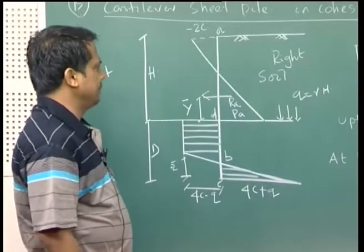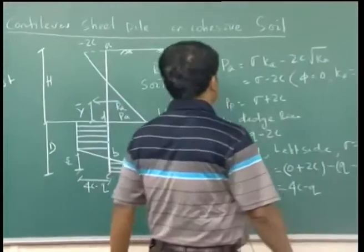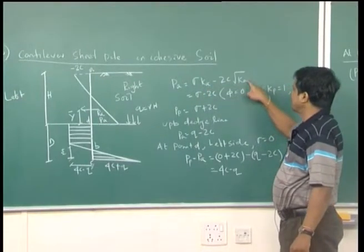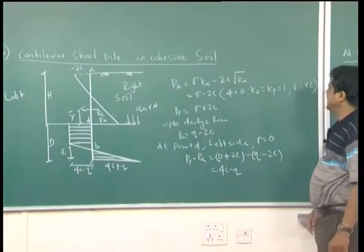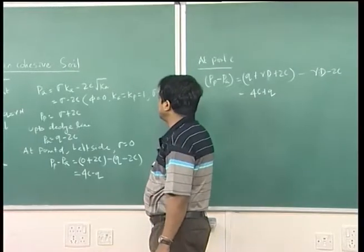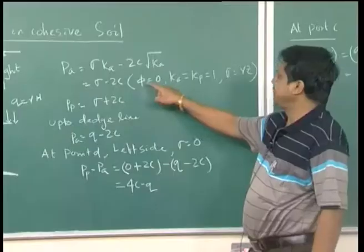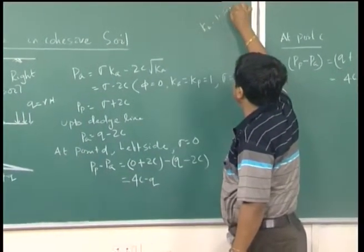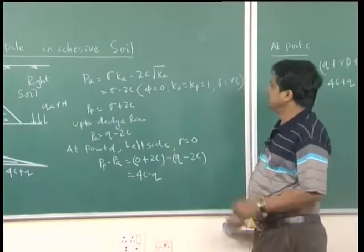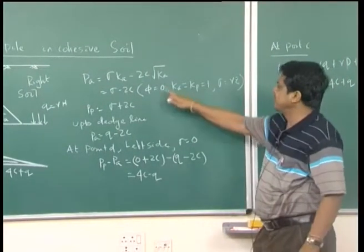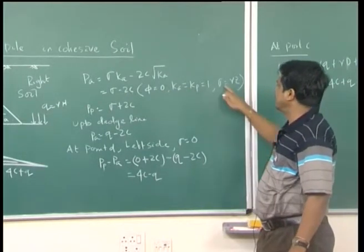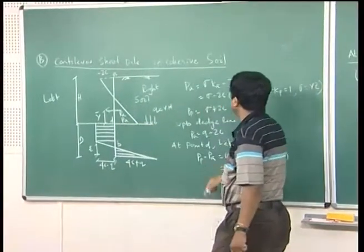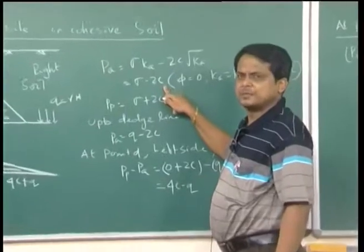The active earth pressure equation is PA = σKA − 2C√KA. For purely cohesive soil with φ = 0, KA = 1 − sinφ / (1 + sinφ) = 1, and KP = 1, and σ = γZ. So PA at the base is γZ − 2C.